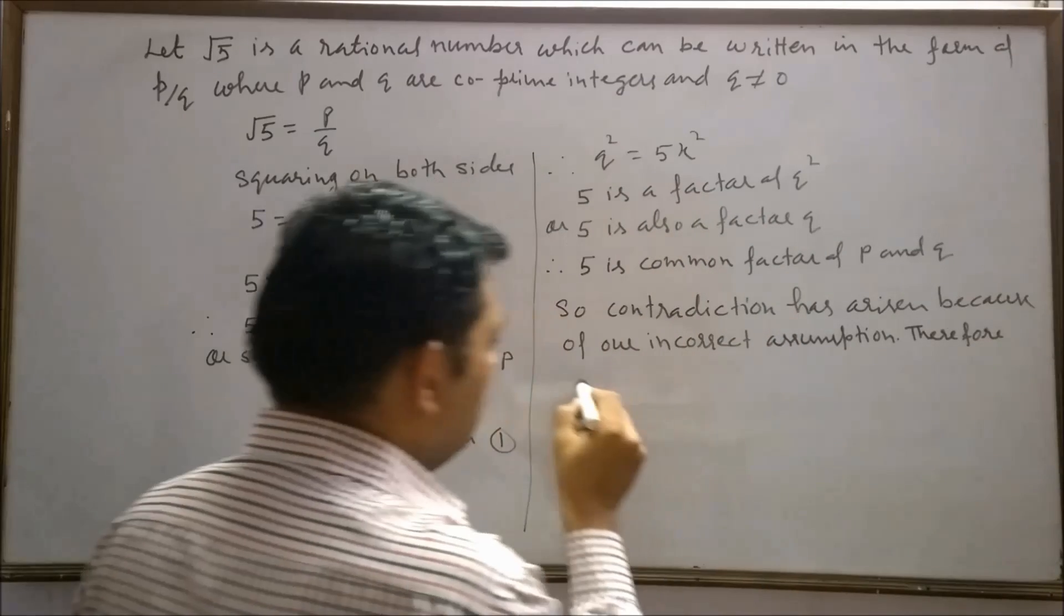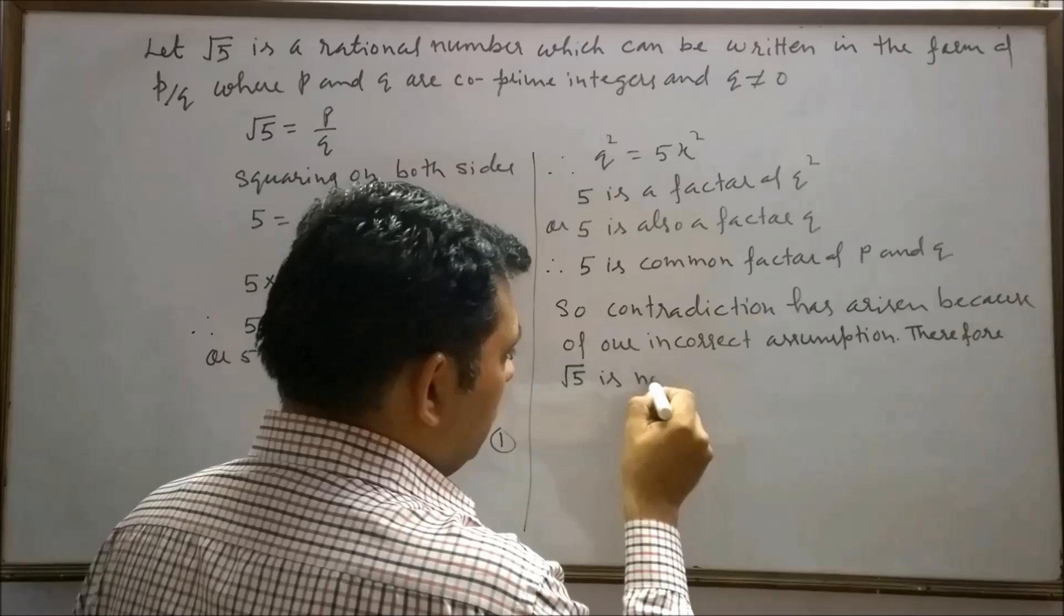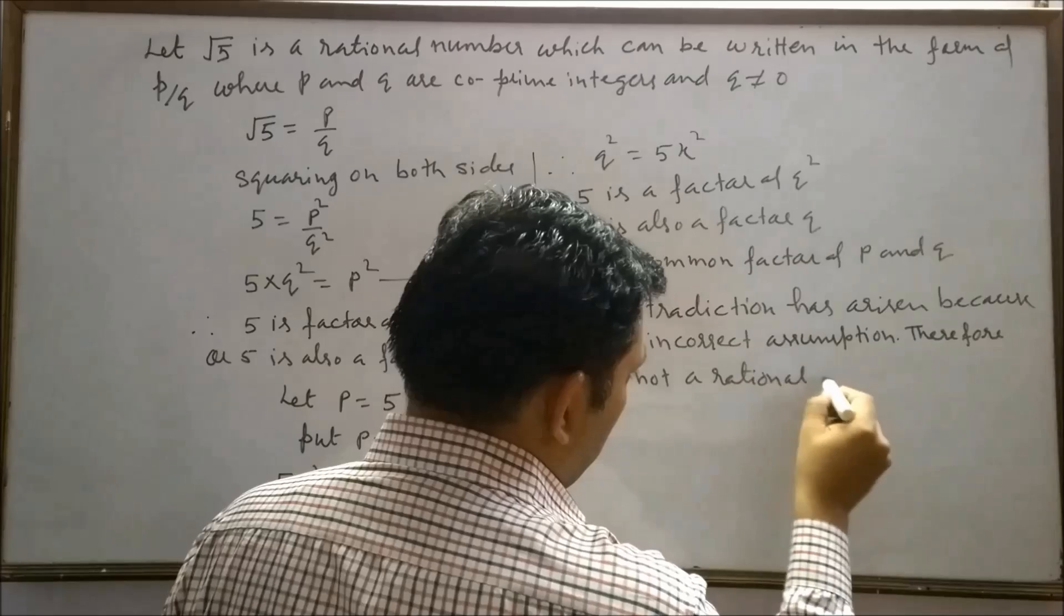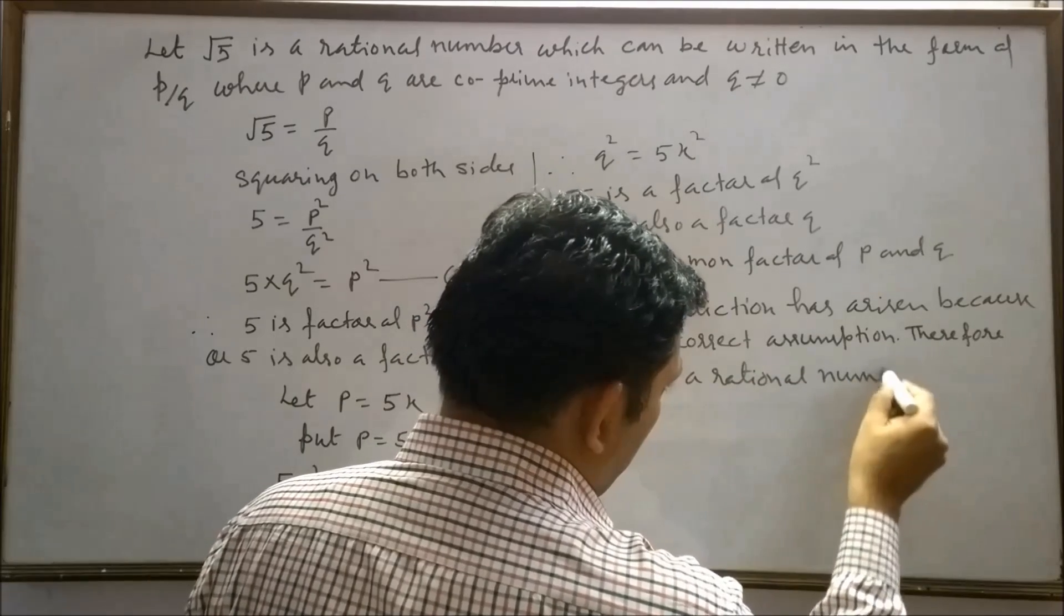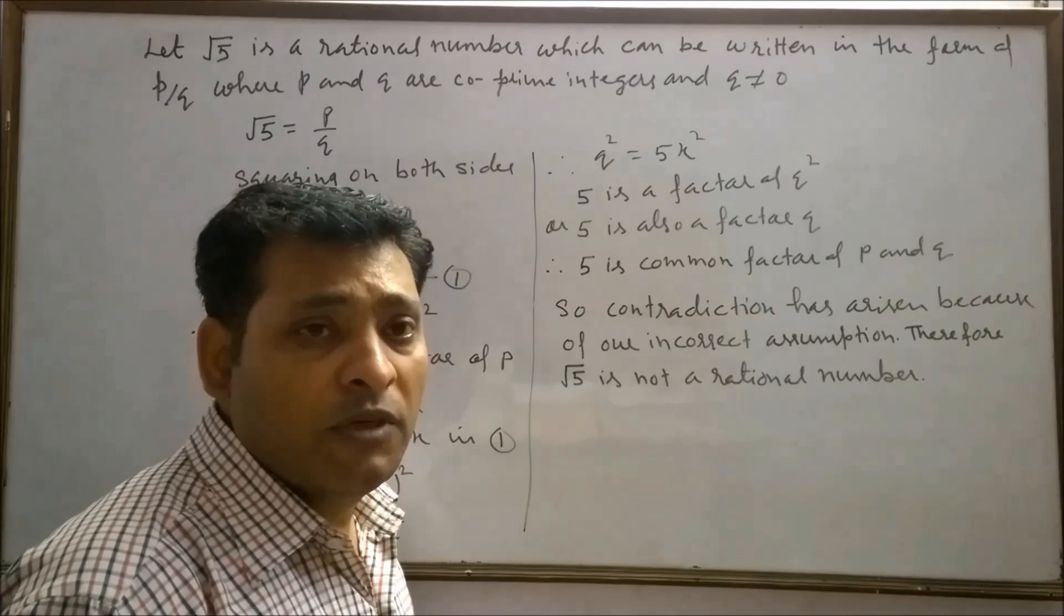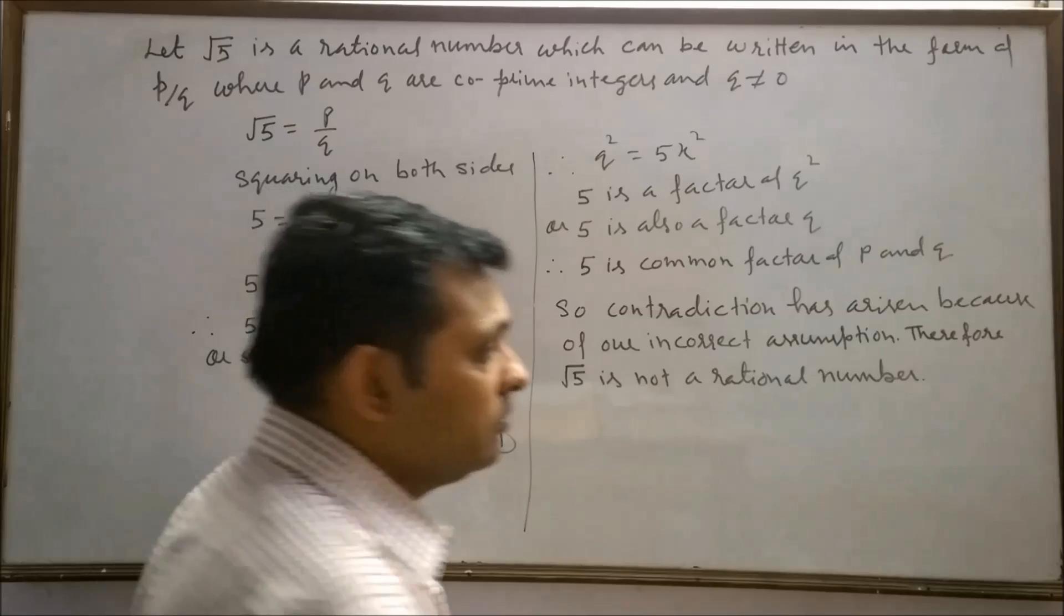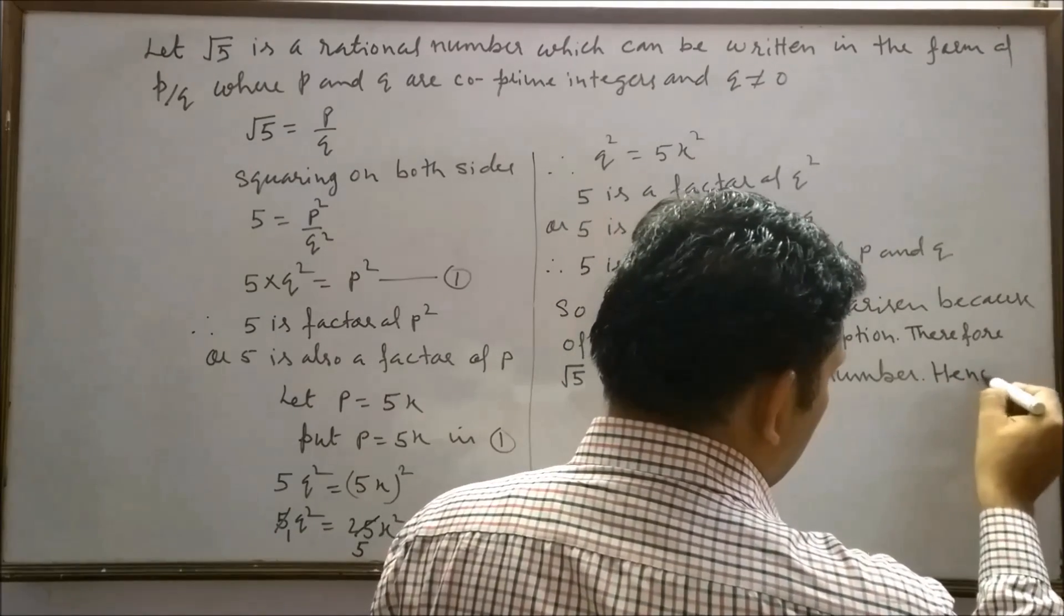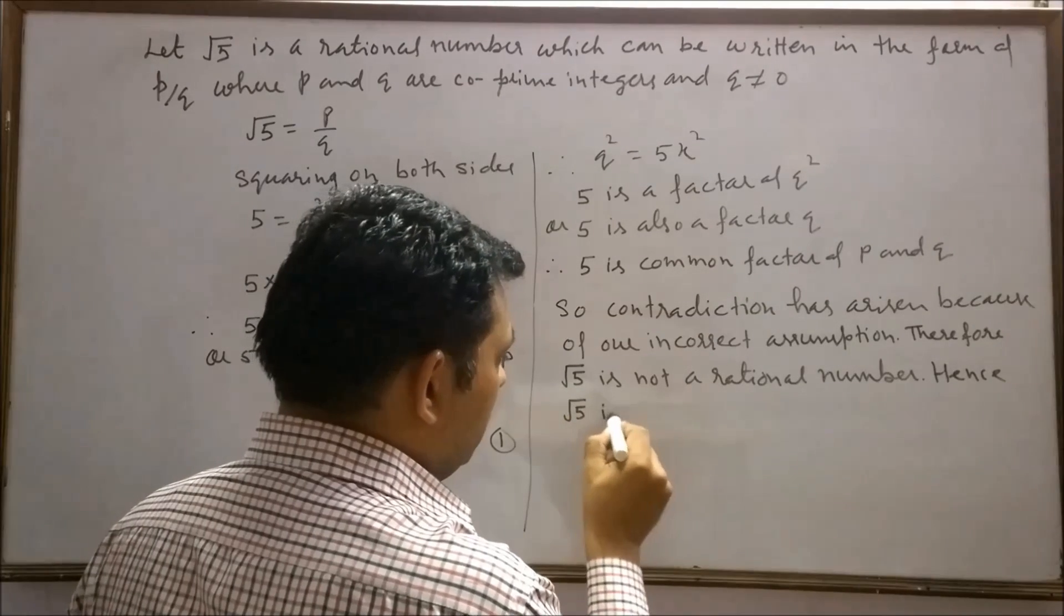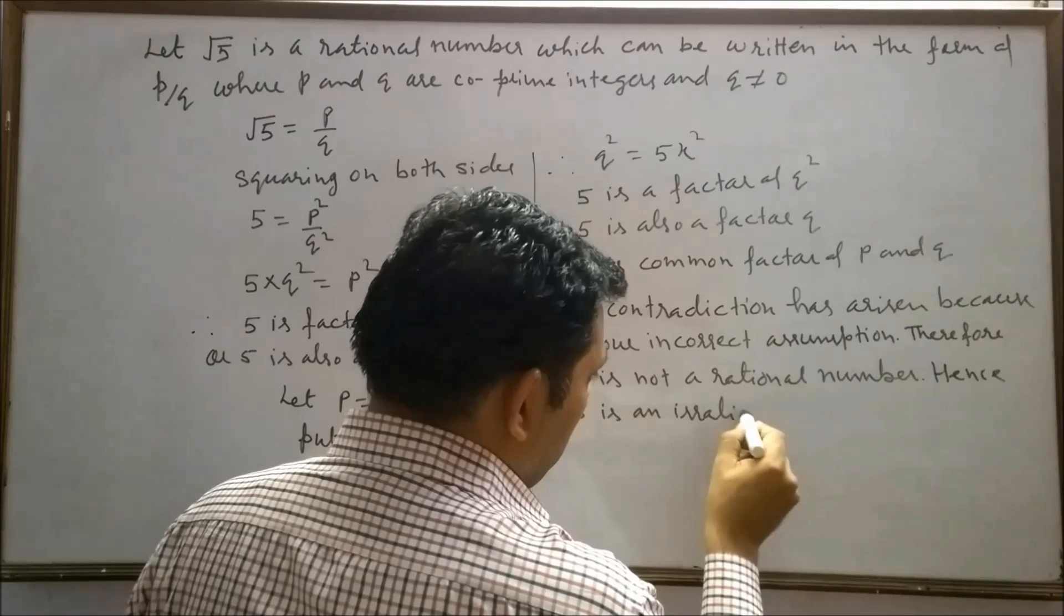Therefore, root 5 is not a rational number. If the real number which is not rational is definitely an irrational number. Hence, root 5 is an irrational number.